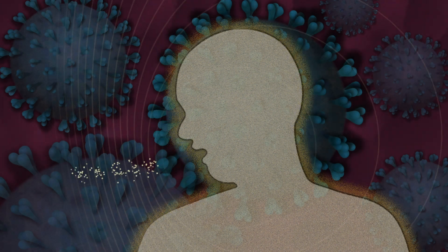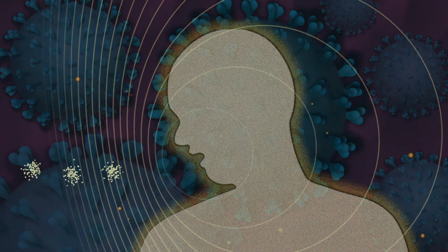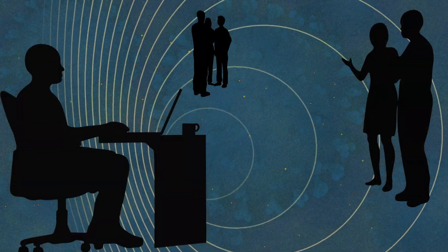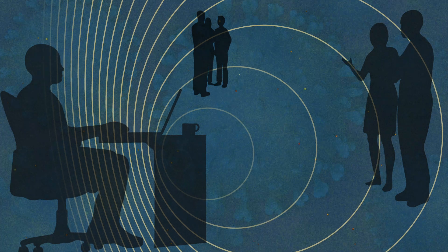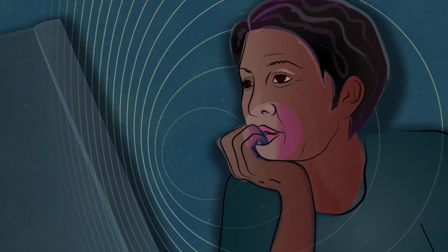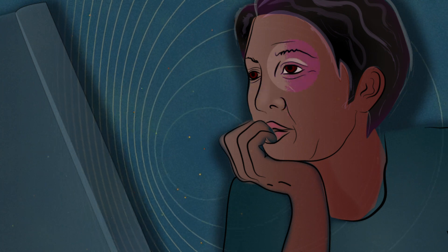Infected people emit tiny virus droplets when talking, sneezing, or coughing, or possibly just breathing. They land on a person, surrounding surfaces, or in some cases remain suspended in the air. These droplets enter the body through mucous membranes found in the mouth, nose, and eyes.